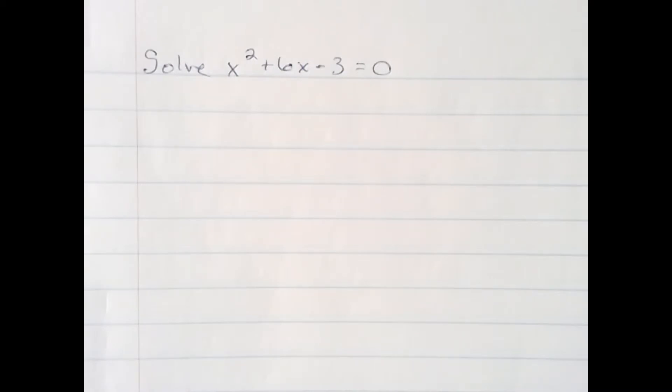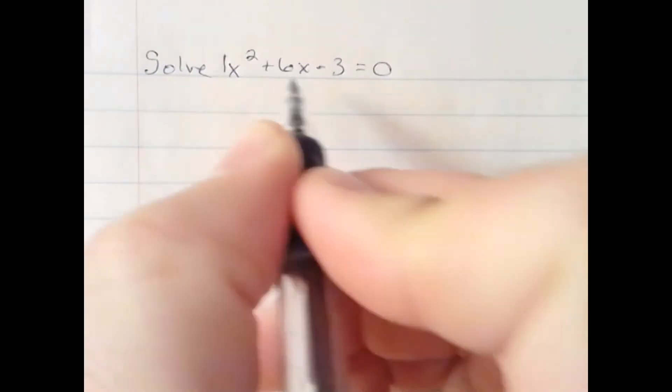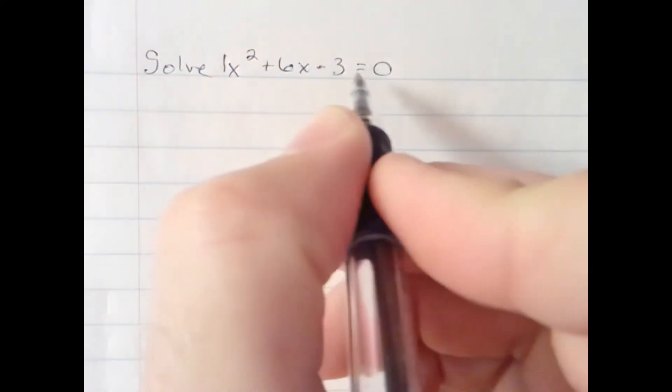Here we're going to solve the quadratic using the quadratic formula because it cannot be factored. It's important to note that our coefficients are: a is 1, b is 6, and c is negative 3.